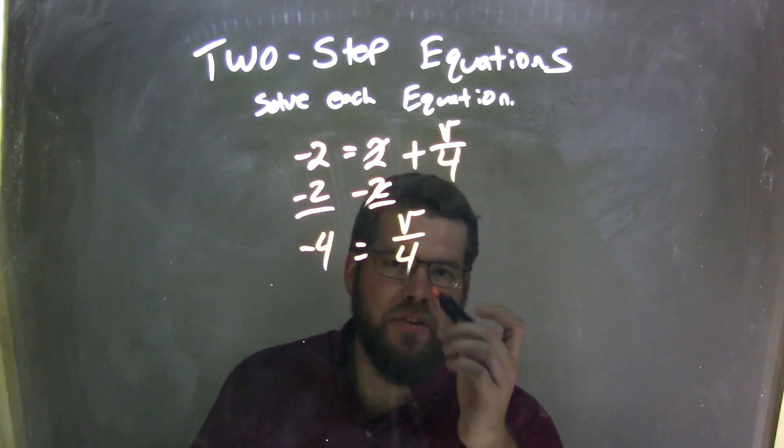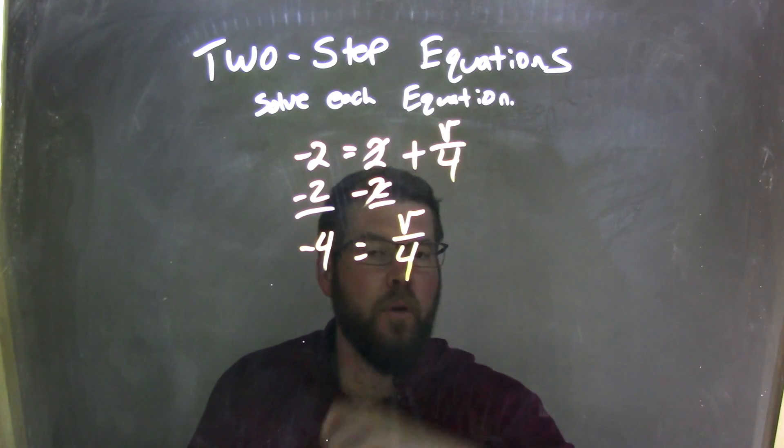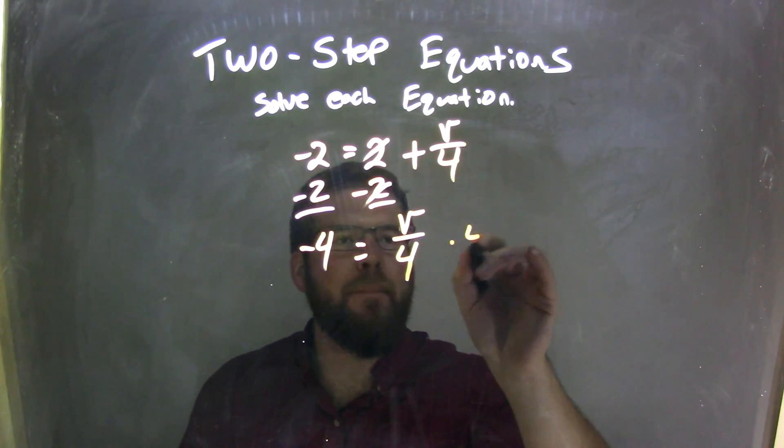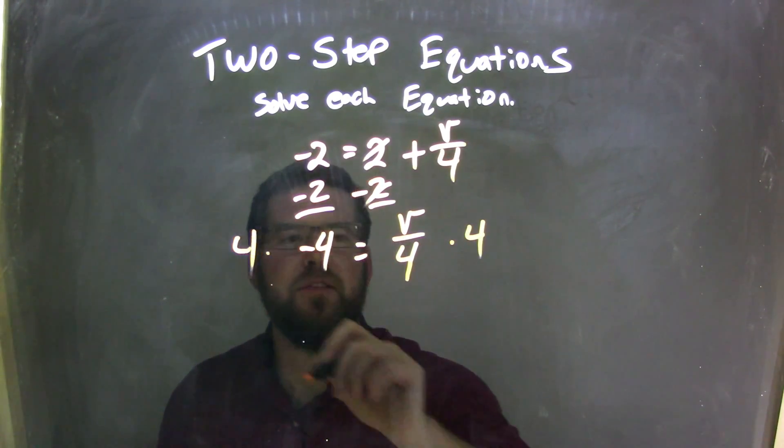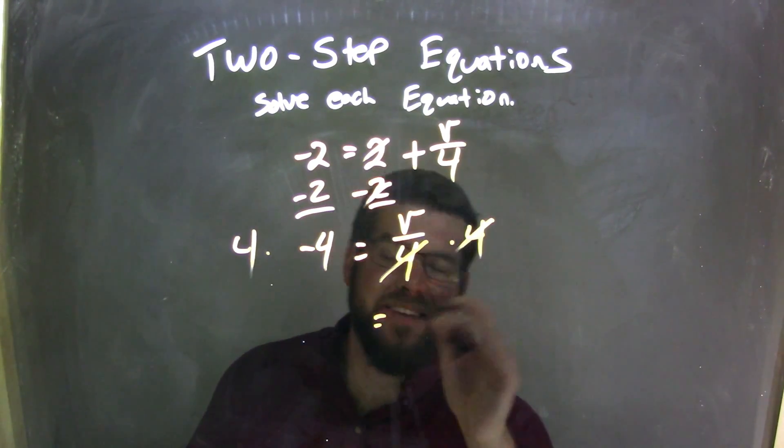Well, opposite of division, that's what's going on here, that divided by 4 is multiplication. So I'm multiplying by 4 to both sides. The 4's on the right, be careful, cancel.